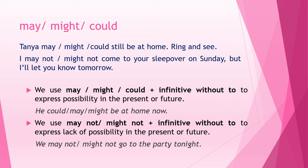Let's look at the first set: may, might, or could. 'Tanya may/might/could still be at home — ring and see.' You can choose to use any one of these three in the sentence and it is still correct. We use may, might, or could plus the infinitive without 'to' to express possibility in the present or future. Possibility means there is a chance that it can happen or not. For example: 'He could be at home now,' 'He may be at home now,' or 'He might be at home now.'